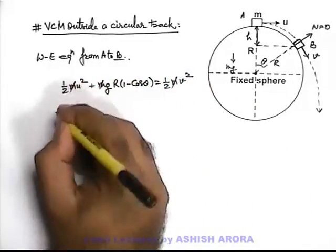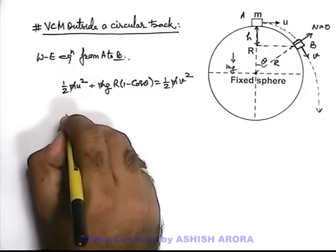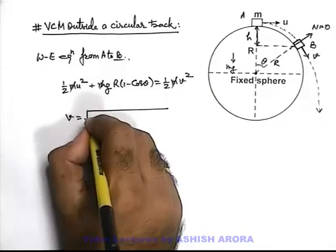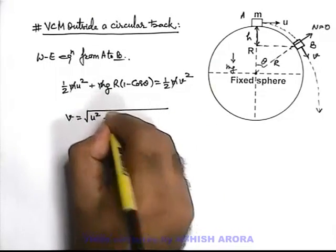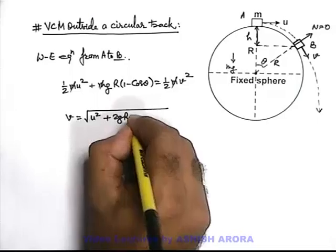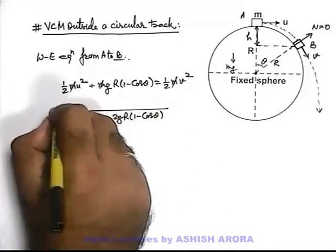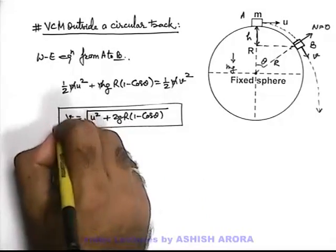Here m gets cancelled out, and on solving we will get the speed of body as a function of angle theta as root of u² plus 2gR(1 - cos theta). Say this equation is equation 1.